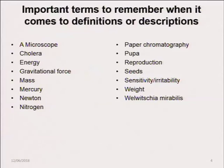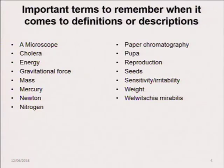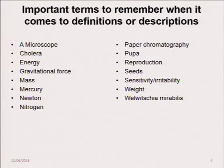The important terms to remember when it comes to definitions are highlighted here. These terms can be asked — for example, define microscope. The following are key terms: microscope, correlators, energy, gravitational force, mass, mercury, newton, nitrogen, paper chromatography, pupa, reproduction, seed, sensitivity, weight, and Whipple-Mirabellas. These are the terms and descriptions you must know for your examination. You can be asked in different ways — to describe or define — but if you understand them, you'll be able to do better.